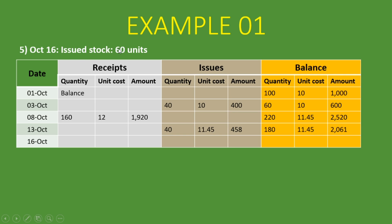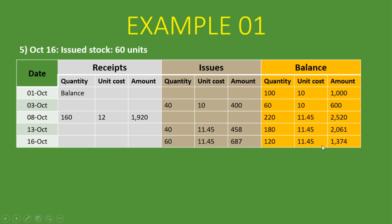On the 16th of October, we issued 60 more units. We put the date, 60 units under issues at 11 Rand 45 cents, giving a total of 687 Rand. Since we are not bringing in new inventory, we maintain the same weighted average unit cost of 11 Rand 45 cents. Our balance is 180 minus 60 = 120 units at 11 Rand 45 cents, totalling 1,374 Rand.